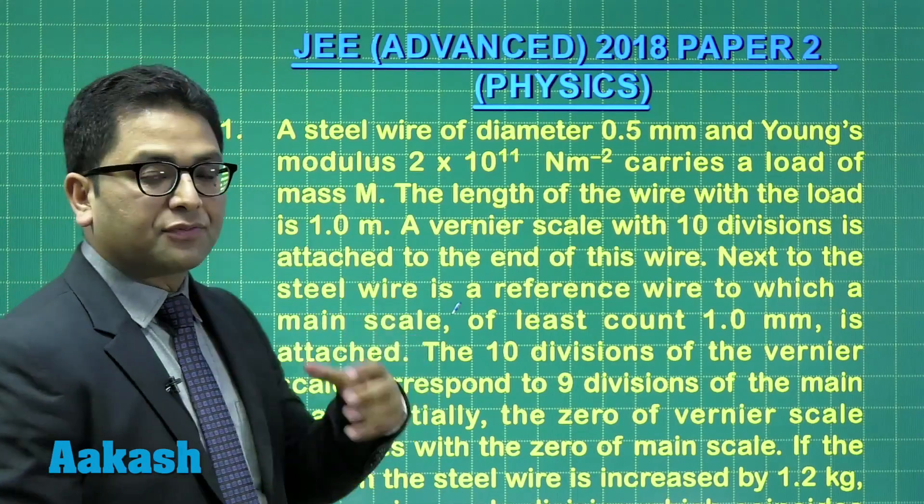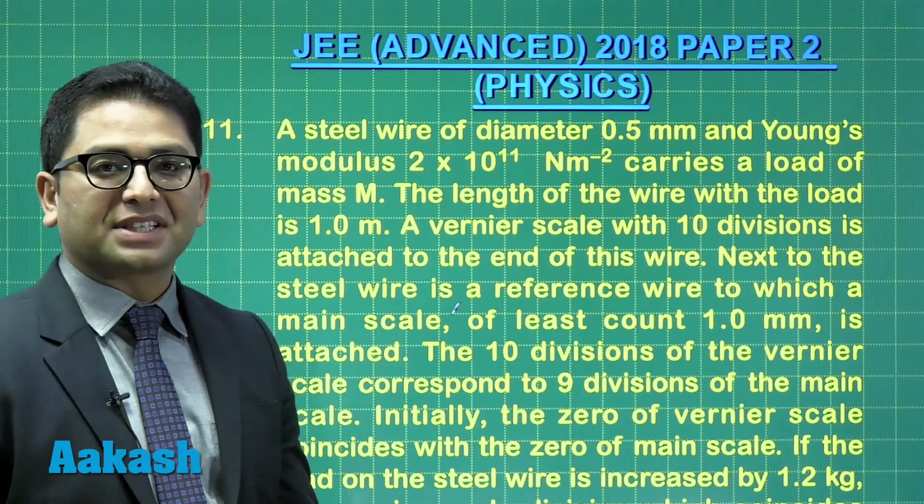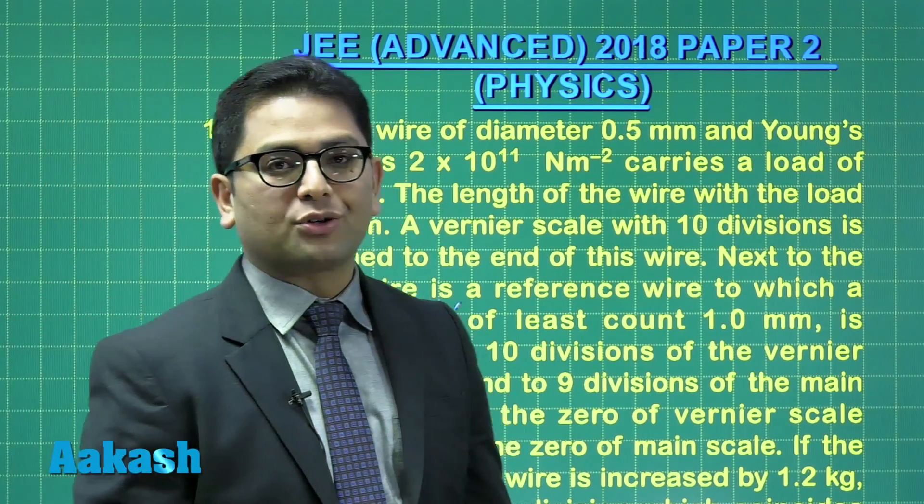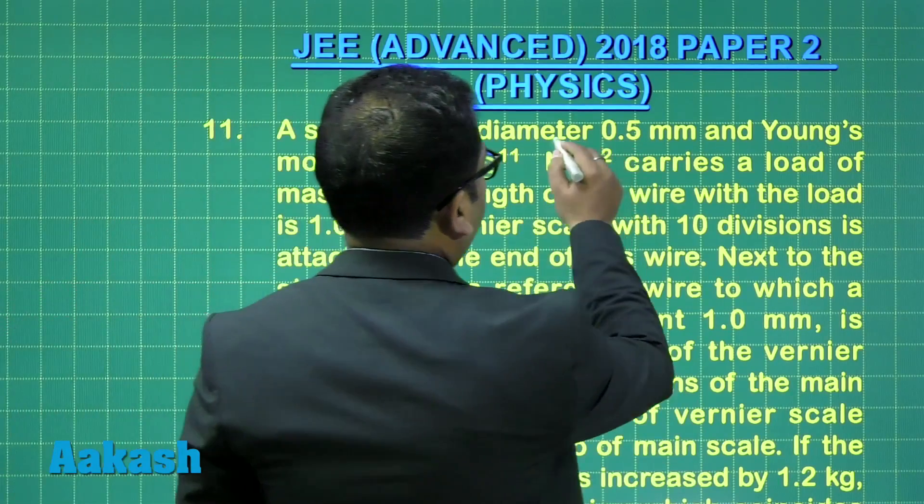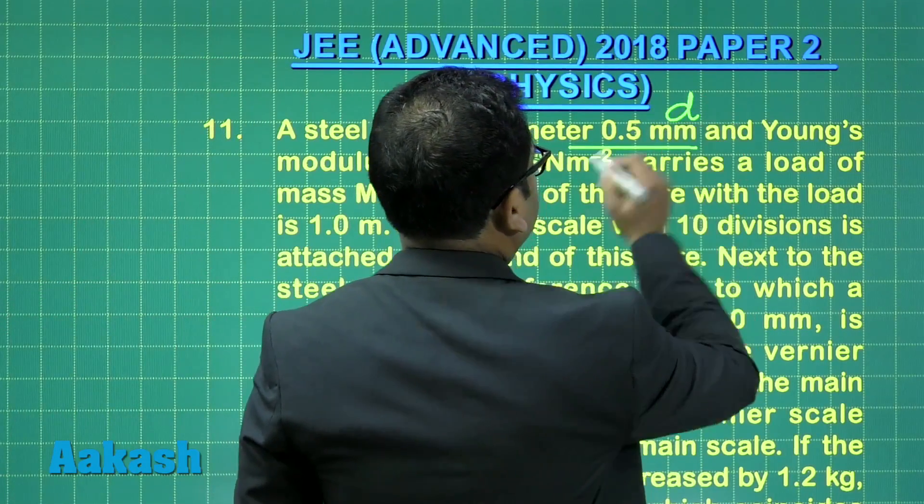Question number 11 is from, again, experimental physics where JEE has stood up to its expectation. A steel wire of diameter 0.5 millimeter has been given, so this is D.